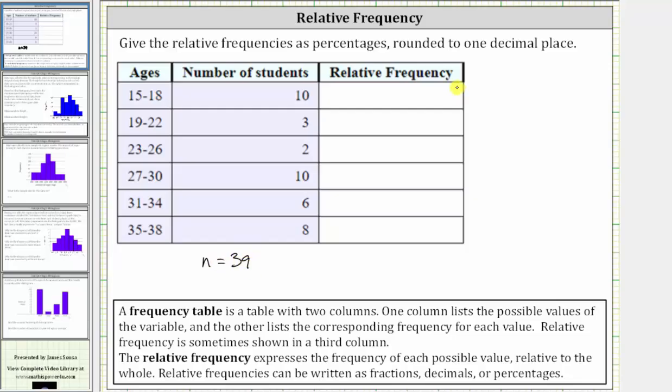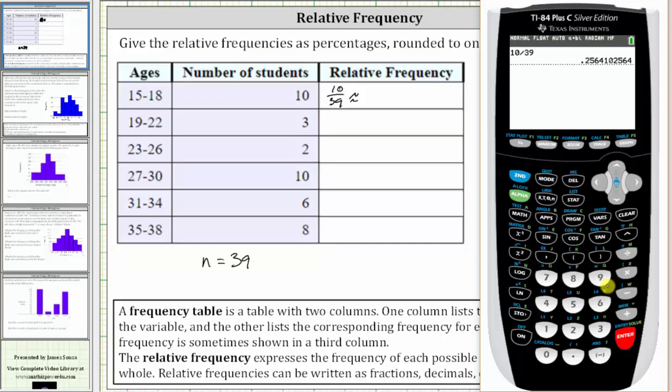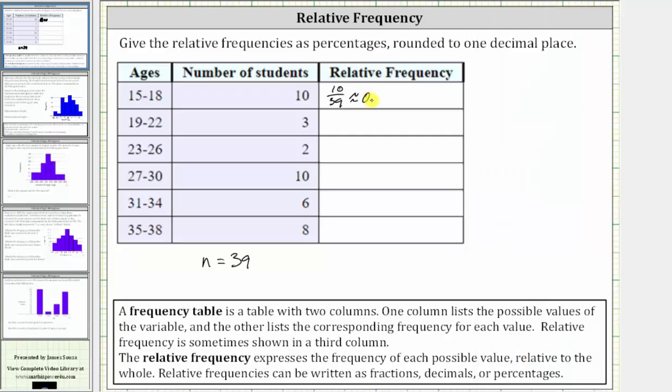And now we can determine the relative frequency. Because there are 10 students of ages 15 through 18, the relative frequency is 10/39 as a fraction. Now let's convert this to a decimal and percentage. 10 divided by 39 to three decimal places is approximately 0.256, which as a percentage to one decimal place is 25.6%.